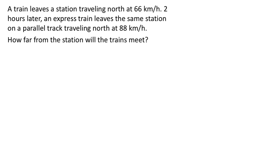So let's read it first. A train leaves a station traveling north at 66 kilometers per hour. Two hours later, an express train leaves the same station on a parallel track traveling north at 88 kilometers per hour. How far from the station will the trains meet?